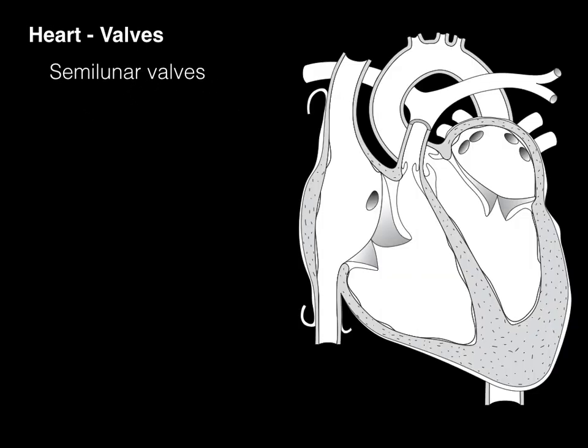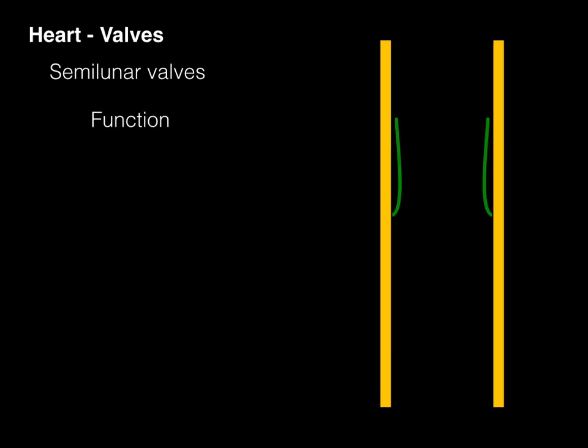Our semilunar valves are the pulmonary valve and the aortic valve, which is right there. The function of these valves is also to prevent backflow. We've got our ventricle below, and there we have the pulmonary trunk or aorta above because right ventricle pumps blood to the pulmonary trunk, left ventricle pumps blood to the aorta.